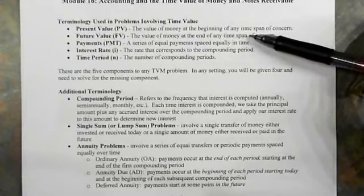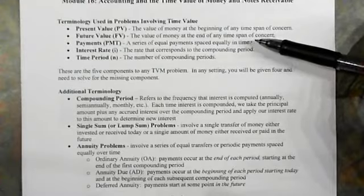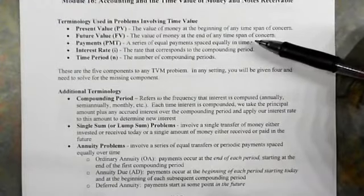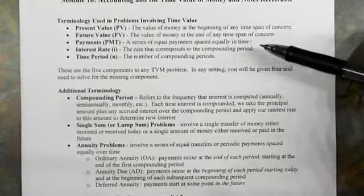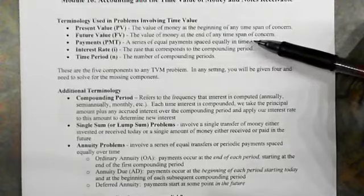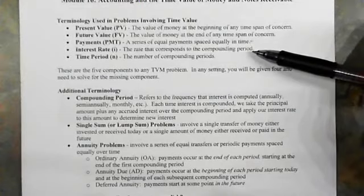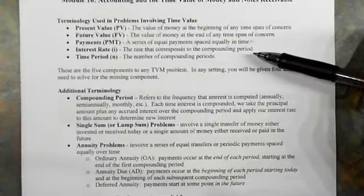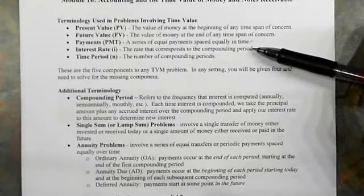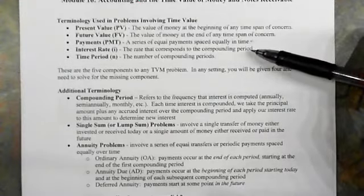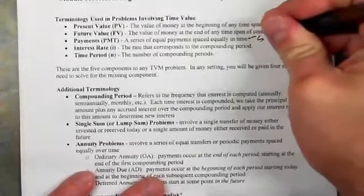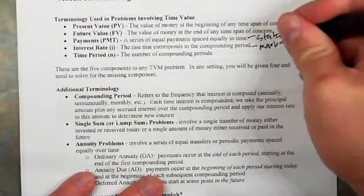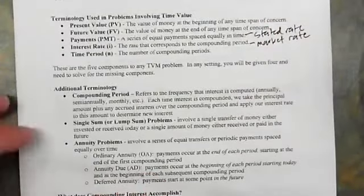In accounting, payments will represent interest — both stated and not stated — but we're just going to worry about the stated payments. The payments are going to correlate to the cash flow of the bond or the note over time. The interest rate is going to be the rate that corresponds to the compounding period in the problem. The interest rate we'll use will be what we call the market rate of interest, not the stated rate. The payments correlate to a stated rate, and the interest corresponds to a market rate.